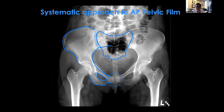The congruence of the iliopectineal and ilioischial lines as they come up should meet the bottom of the second sacral neuroforamen. If they don't line up with the bottom of the second, that could be an indication of vertical migration of the hemipelvis. And finally, I look out for that L5 transverse process fracture — if it's avulsed, that's a sign that there was a lot more displacement at some point.